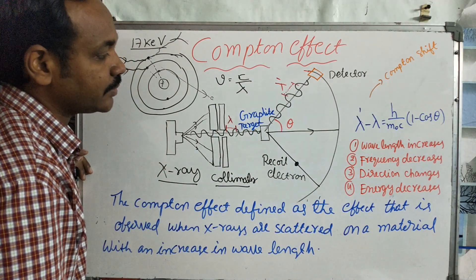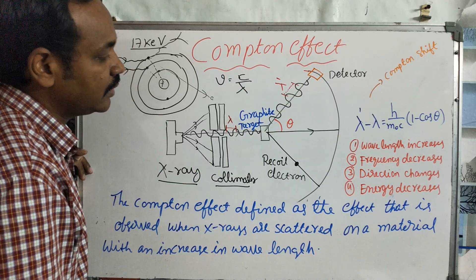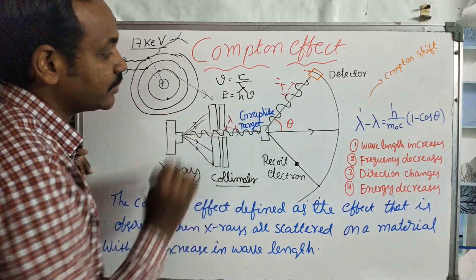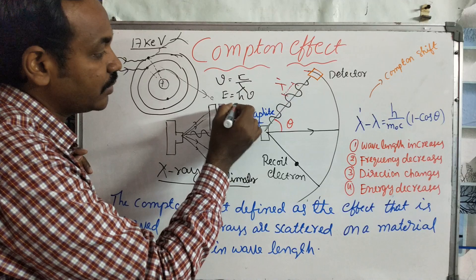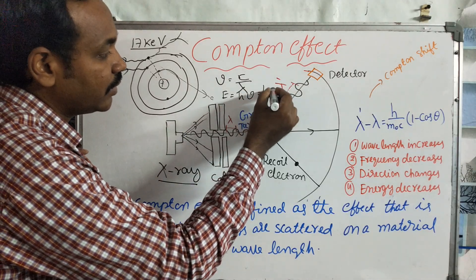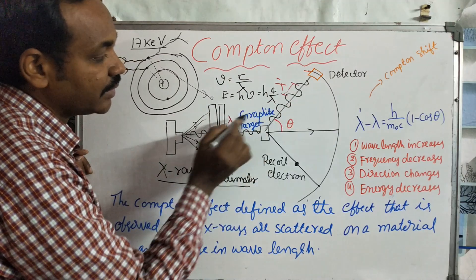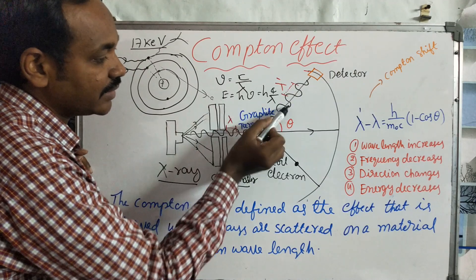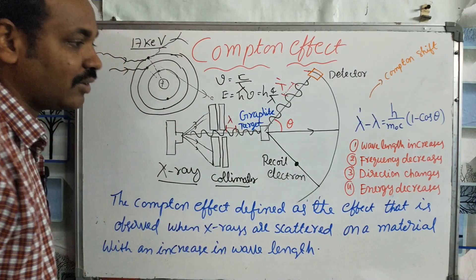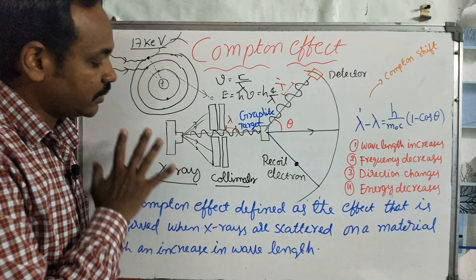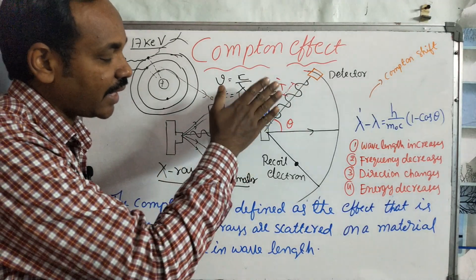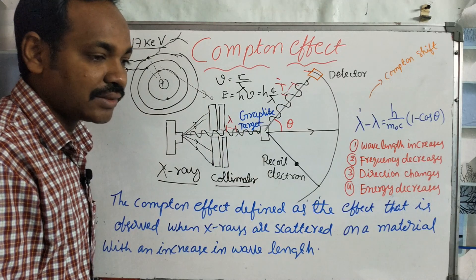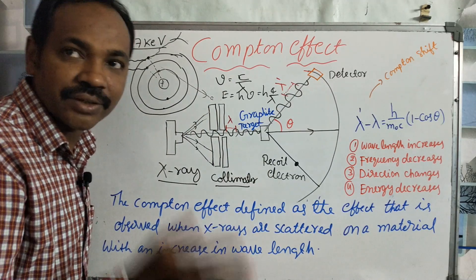Energy decreases as well, because E equals h times nu (frequency). So E equals h times nu, and since E equals h times c divided by lambda, when lambda increases, energy decreases. So after X-rays hit the target and scatter, the energy decreases. This is something that classical mechanics and the Thompson Effect could not explain — and this is what makes the Compton Effect special.